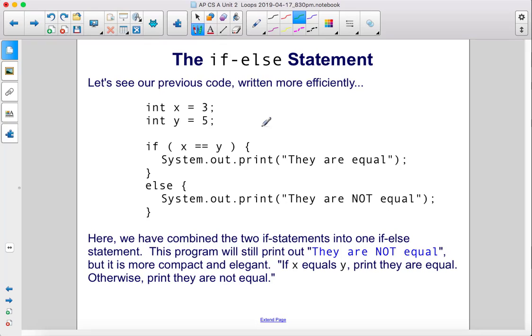Let's see our previous code written more efficiently. So here we have an x equals 3 and y equals 5. If x equals y, which it doesn't, so we're not going to run this statement, that means we're going to run this statement here, the else. So it will print they are not equal.